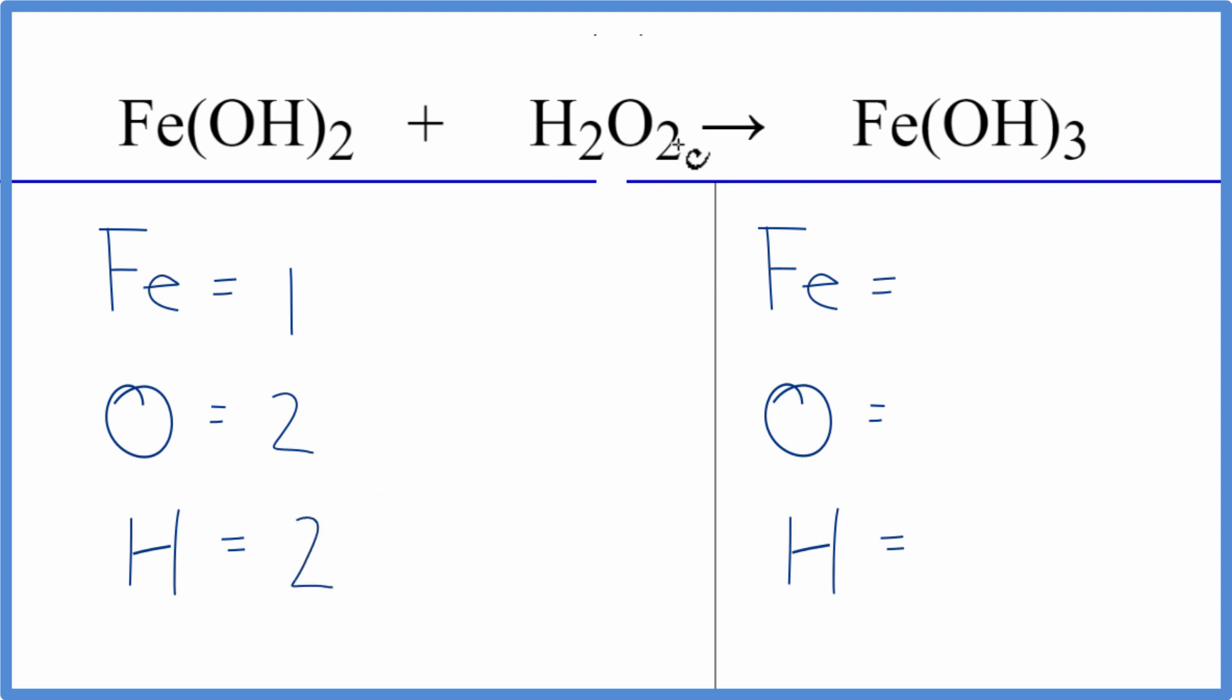But we also have to count these up here too. So we have 2 hydrogens, a total of 4 hydrogens, and then we have the 2 oxygens. So we have a total of 4 oxygen atoms.